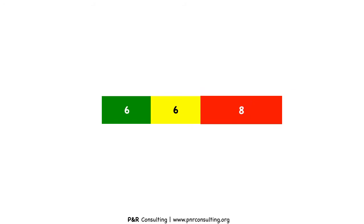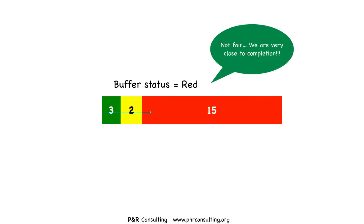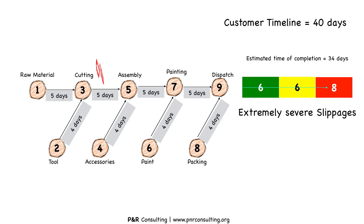Hope you have a better understanding of how to use buffer indicators to monitor and control the project. However, it doesn't end here — determining the size of the buffer itself is crucial in effective monitoring. For instance, a larger green zone leads to a situation wherein the project will seem to be under control even if key milestones are not achieved. At the same time, a very conservative approach would lead to a situation wherein the project appears well under control, but the status report shows a situation contrary to the truth, leading to extreme pressure on the project team.